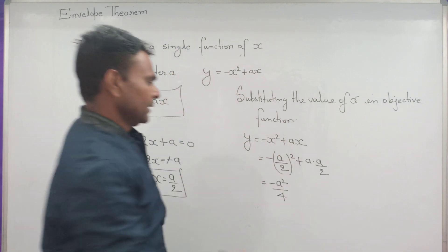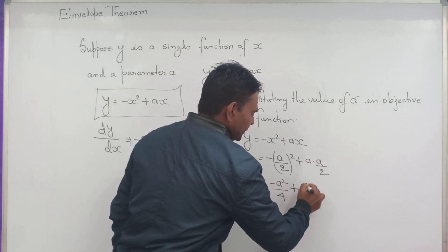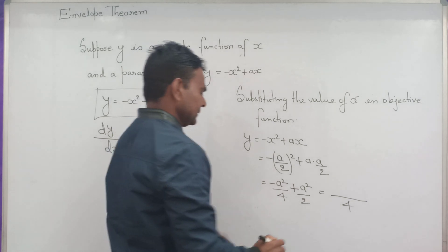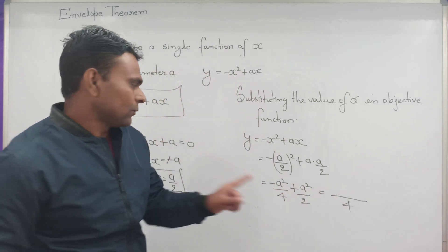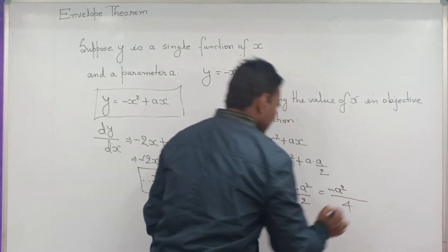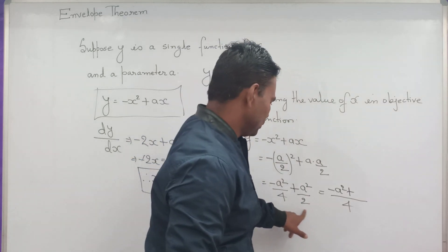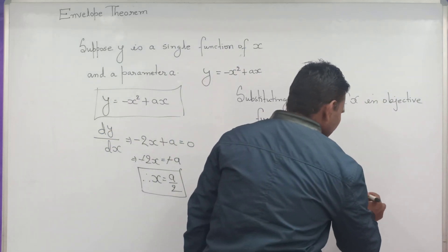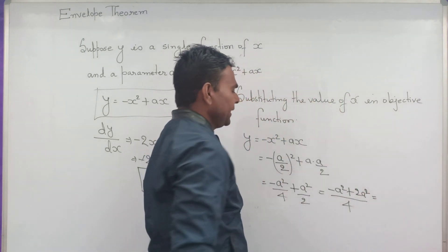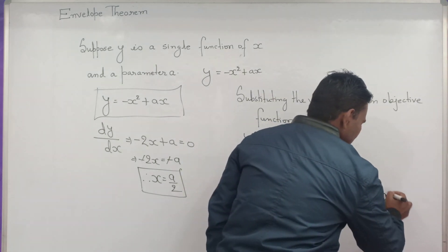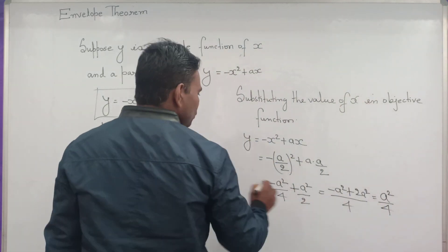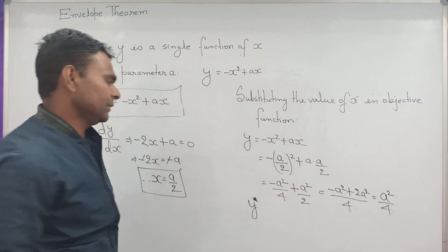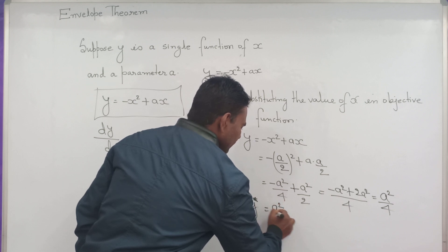Simplifying, taking LCM equal to 4: minus a squared plus 2 times a squared, all over 4, which gives a squared over 4. So the maximum value y star equals a squared over 4.